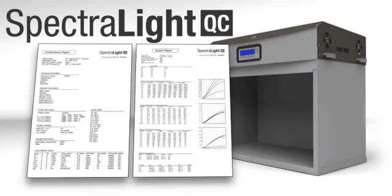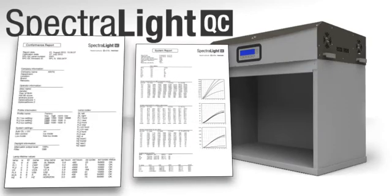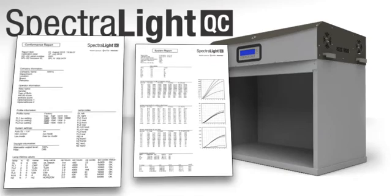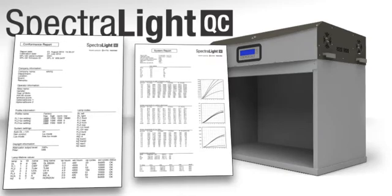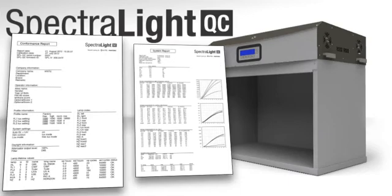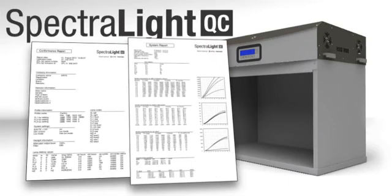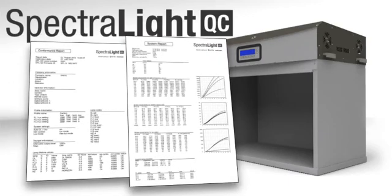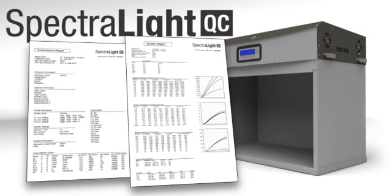A conformance report includes calibration information, lamp status, lamp serial numbers, and other information about your instrument. A system report can provide valuable information about how your lamps are functioning.